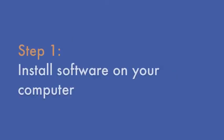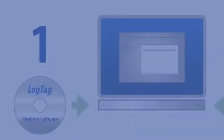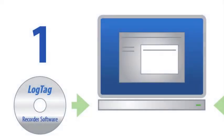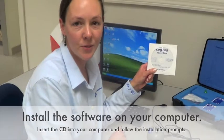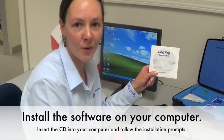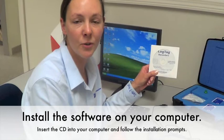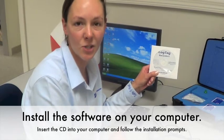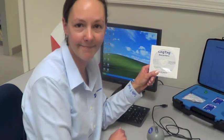The first thing you do is install the software CD on your computer. Insert the CD into your computer's CD drive and then follow the installation prompts. You only need to install the software once before using the Validation Kit the first time.